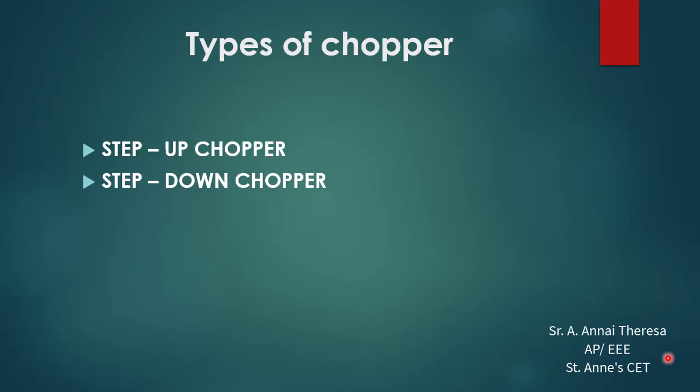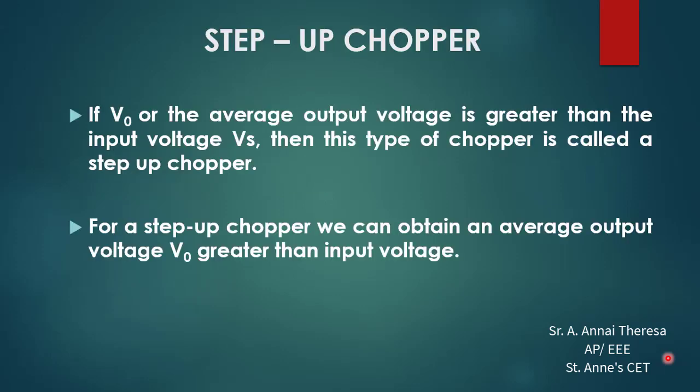In this power electronics session, we will look at the types of choppers. A chopper is also called a DC transformer because, like a transformer, a chopper can step up or step down the voltage. Based on this, we can classify the chopper as a step up chopper and a step down chopper. We will see them one by one, starting with the step up chopper.